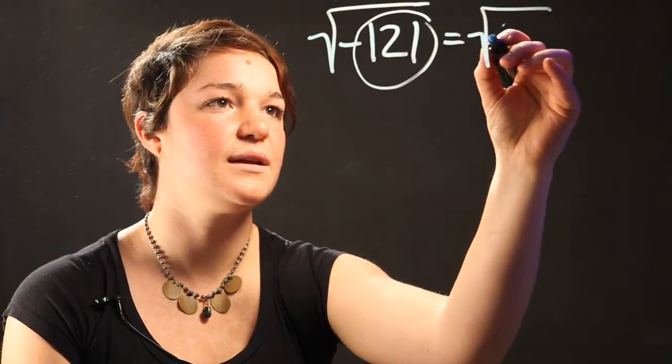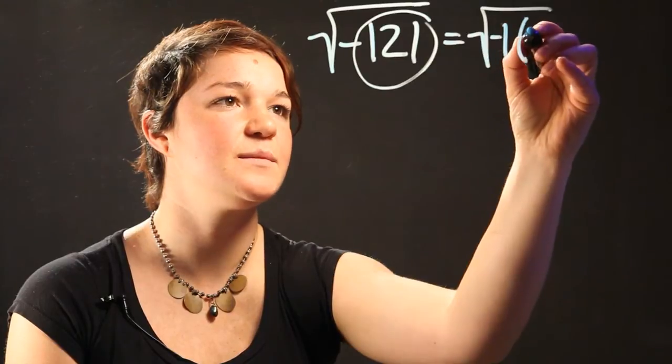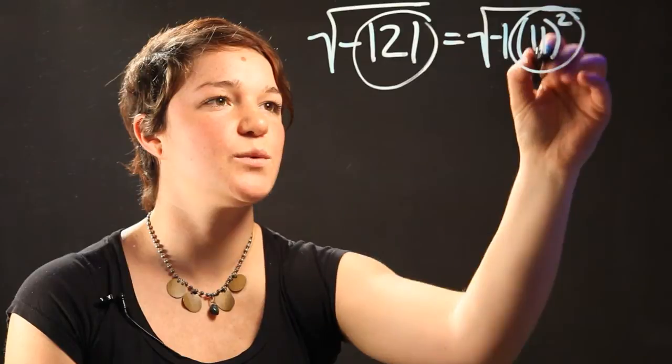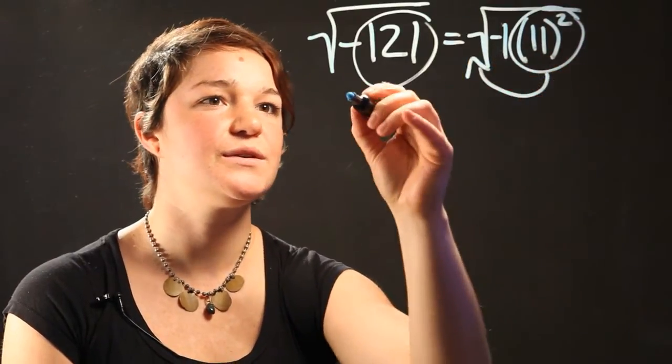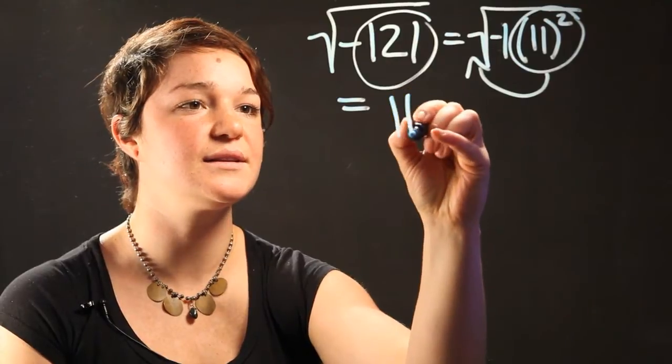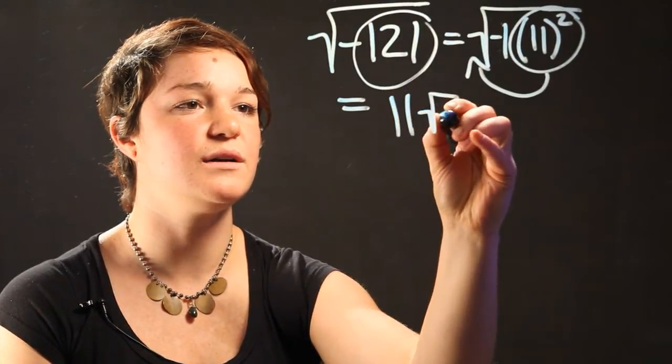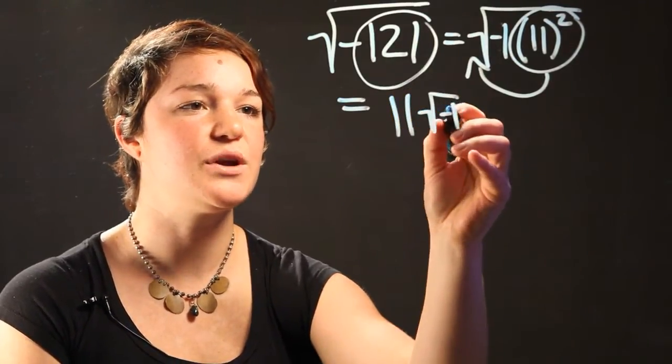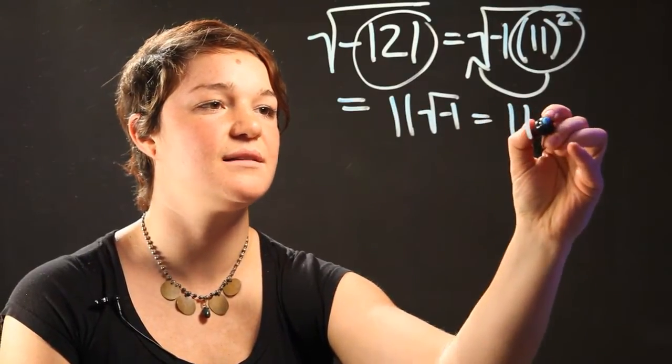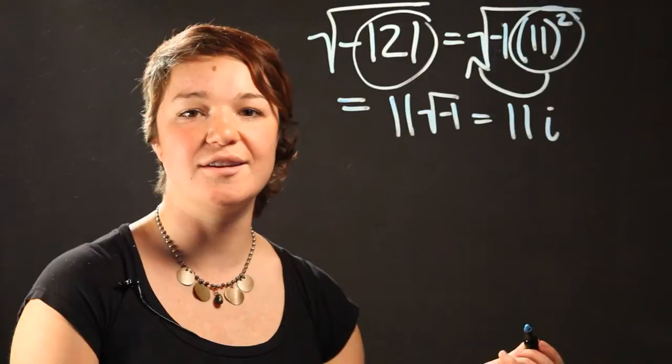So this is the same as saying it's the radical of negative 1 times 11 squared. So we're going to take this 11 squared and pull it out. So really, what this equals is 11 times radical of negative 1. And we know that radical of negative 1 is the same as saying 11i. It's an irrational number.